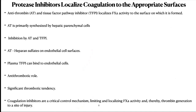We don't want coagulation to happen at inappropriate sites — it should happen only at appropriate sites when there is tissue injury. Antithrombin and tissue factor pathway inhibitor (TFPI) are important in this regard. Factor Xa on the surface is relatively protected from inhibition by antithrombin and TFPI. Antithrombin can bind to heparin surfaces on endothelial cell surfaces.